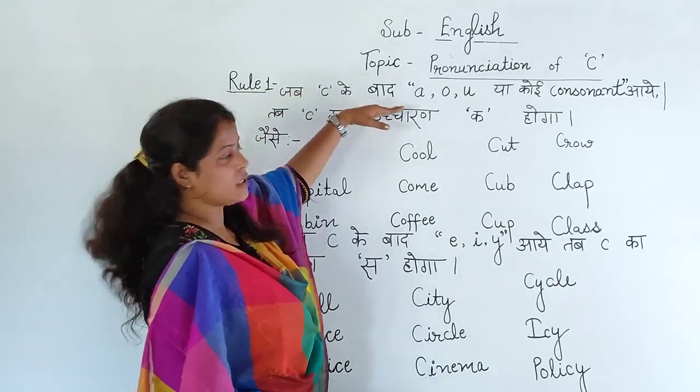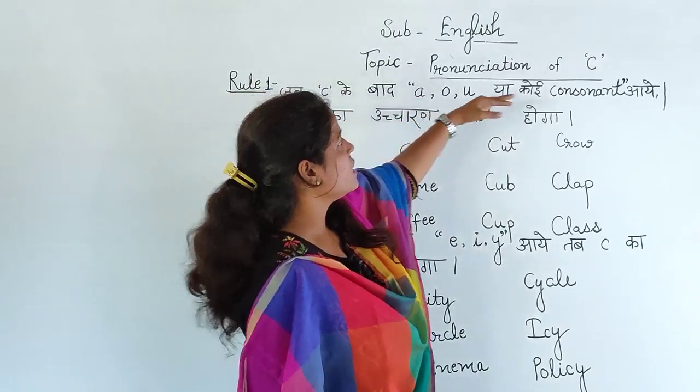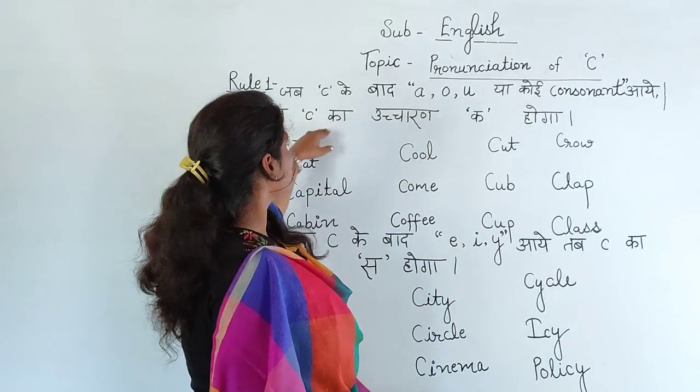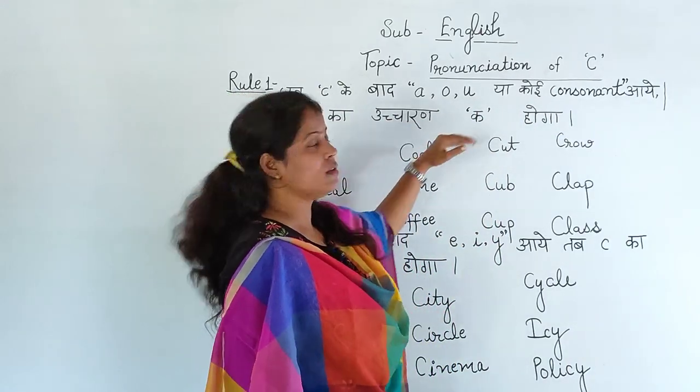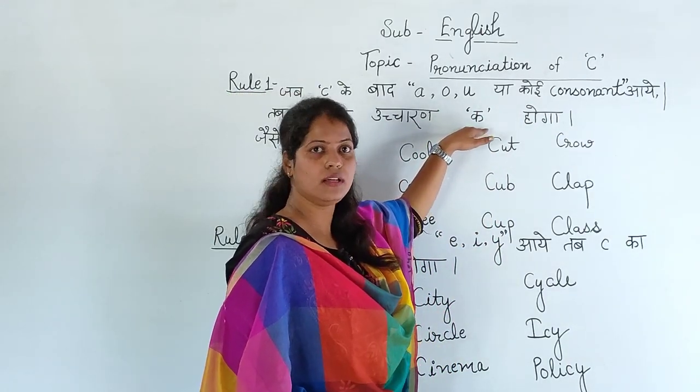When C comes after A, O, U, or a consonant, then C will be pronounced as 'K'. Okay?